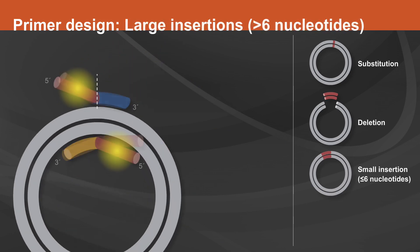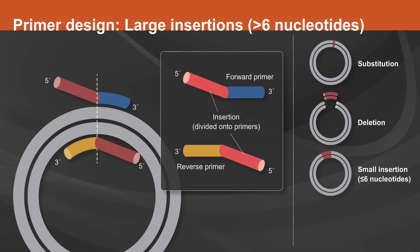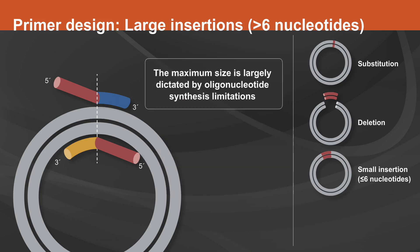Larger insertions are created by incorporating half of the desired insertion into the 5' ends of both primers. The maximum size of the insertion is largely dictated by oligonucleotide synthesis limitations.